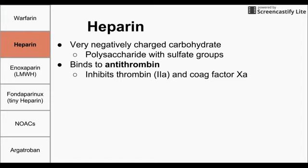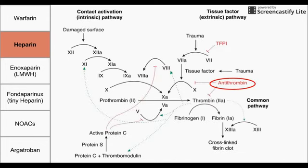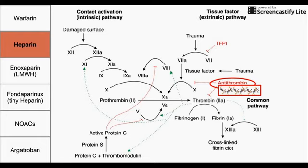Next, we're going to talk about heparin. Heparin is a carbohydrate — it's incredibly negatively charged and littered with sulfate groups. Heparin binds directly to a protein called antithrombin. Antithrombin and heparin together bind thrombin and coagulation factor Xa. Antithrombin works without heparin, but heparin enhances the effects of antithrombin by a factor of 10,000. As shown in this diagram, antithrombin has an inhibitory effect on factor Xa production and on thrombin. Adding heparin increases those effects 10,000-fold, which has made heparin a very popular drug.